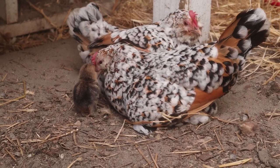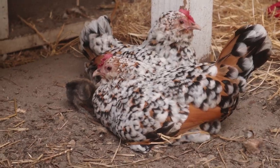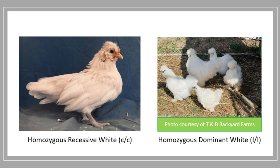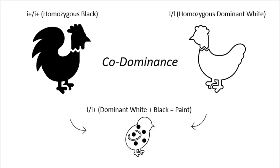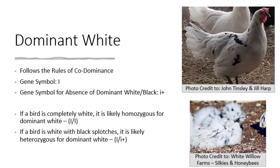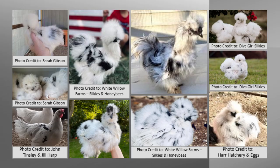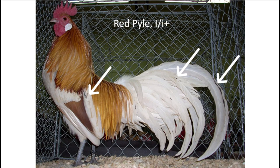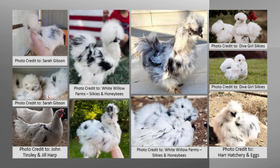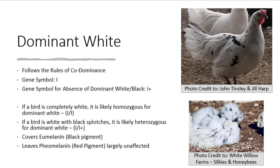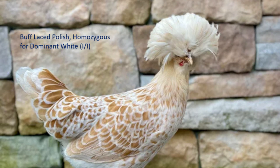Any colored gene that is not on the same locus as recessive white — which is basically all of them — is still passed on by a bird that has recessive white. The next type of white is dominant white. Dominant white is one of the few colored genes in chickens that is an example of codominance rather than simple or incomplete dominance. The gene symbol for dominant white is a capital I, and the absence of dominant white is a lowercase i with a plus sign. Dominant white is tricky because in heterozygous form it should fully inhibit black, but this is not the case. It is often referred to as the leaky gene. In heterozygous form, it often lets black pigment show through, which is responsible for the paint variety in silkies, or black specks on white feathers in varieties like red pile that are only heterozygous for dominant white. In heterozygous form, dominant white typically only affects eumelanin and leaves red pigment largely unaffected.